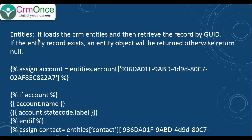The entities object loads the CRM entities and retrieves the record by using the GUID. If the entity record exists, it will return as an entity object; otherwise it will return null. For example, the syntax is: we use the assign tag — assign account equal to entities dot account.